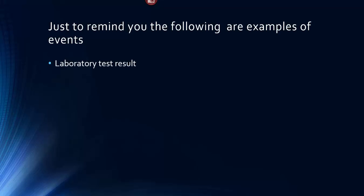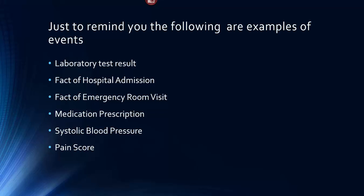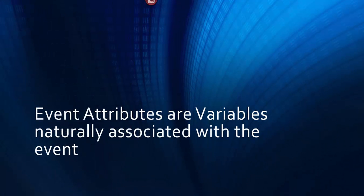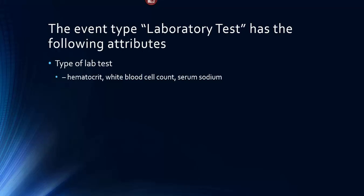Event attributes are variables naturally associated with a patient's index. The event type laboratory test has the following attributes: the type of laboratory test — is it a hematocrit, a white blood cell count, a serum sodium? And the numeric value of the laboratory test.